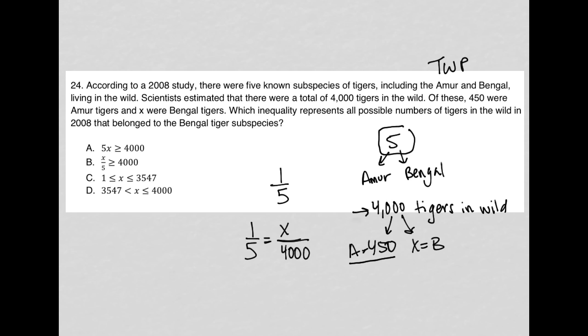Looking at choice A, I can simplify by dividing both sides by 5, and I'd have X is greater than or equal to 800. Is there anything in this question that tells me the number of Bengal tigers is greater than or equal to 800? No, there isn't. There's nothing in the wording that says I have to have more Bengal tigers than Amur tigers. I'm not going to cross it out, but I'm going to be a little hesitant about that.